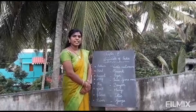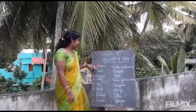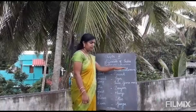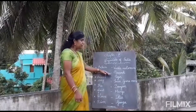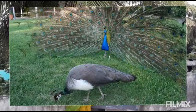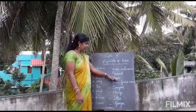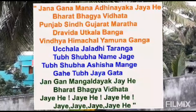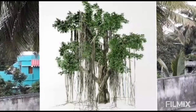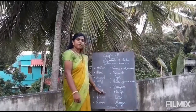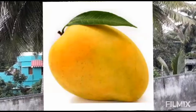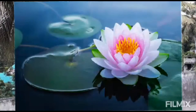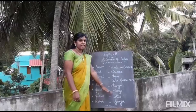We have to discuss about national symbols. Our national anthem is Vanze Madaram. Our national bird is Peacock. Our national animal is Chatter. Our national zhang is Janahanamana. Our national tree is Banyan tree. Our national fruit is Mango fruit. Our national flower is Lotus. Our national river is Ganga.